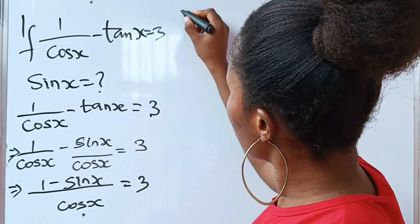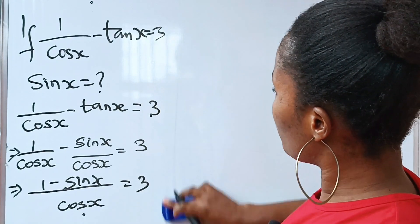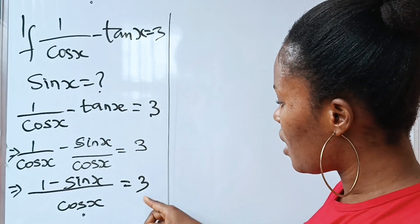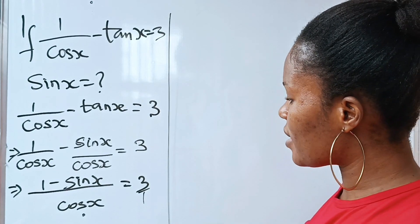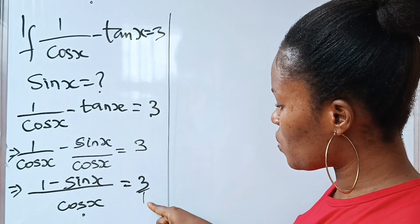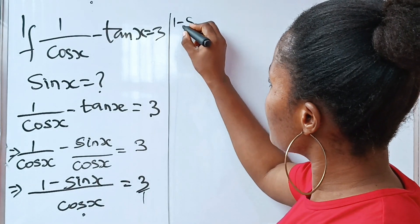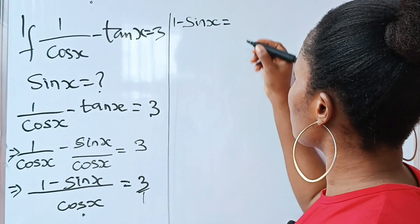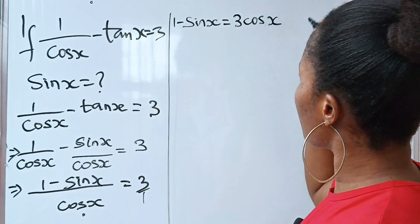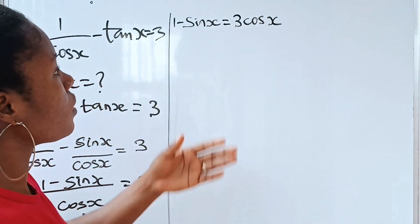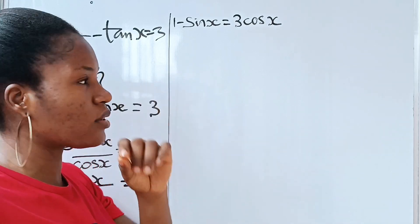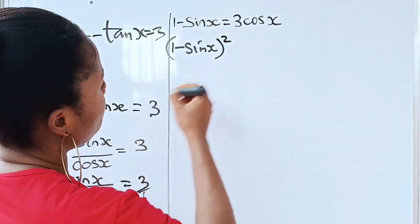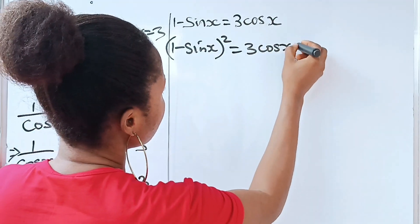Now let's cross multiply. Note that 3 is 3 over 1. So 1 minus sine x times 1 gives us 1 minus sine x, which is equal to 3 times cos x, giving us 3 cos x. Now let's square both sides of this equation — you'll see the reason soon. So we have (1 minus sine x) squared is equal to (3 cos x) squared.